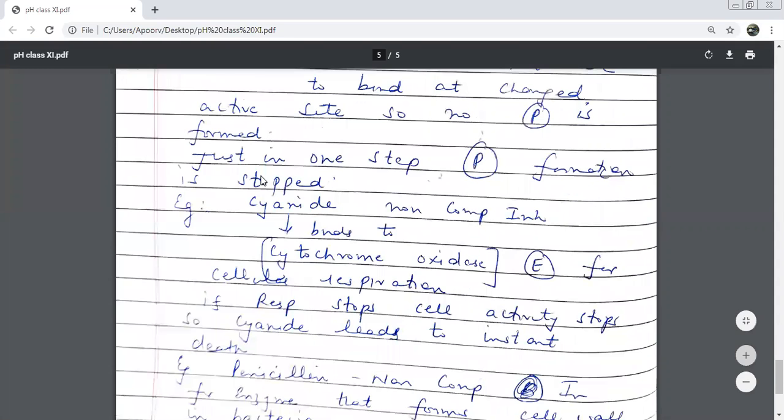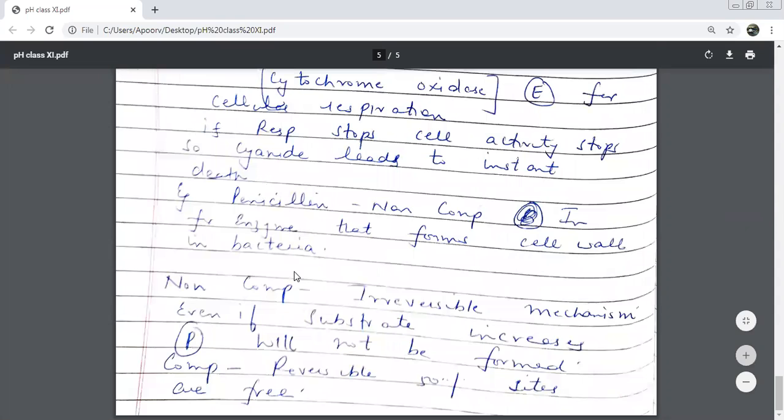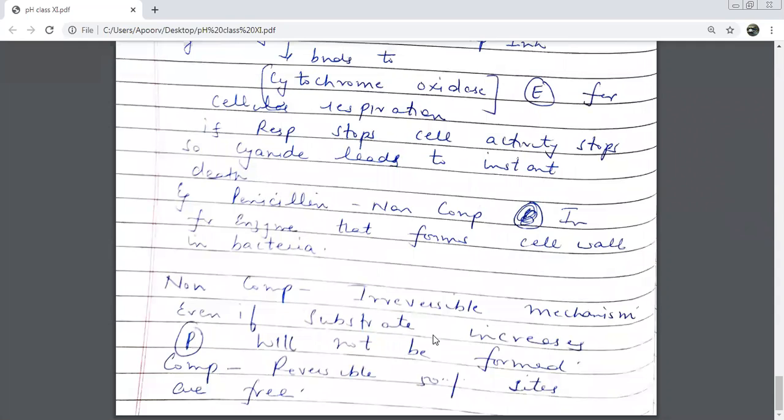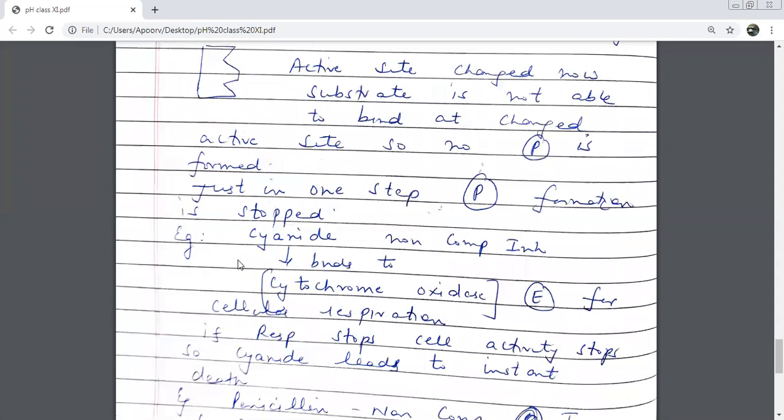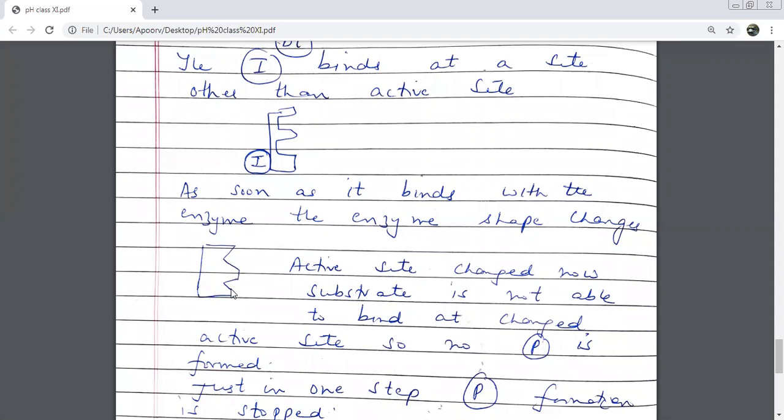That is why we say that non-competitive inhibition is an irreversible mechanism. Even if the substrate increases, the product will not be formed. Why will it not be formed? Because active sites have got deformed. Active sites have changed. So it is no point increasing the substrate in non-competitive inhibition.